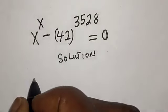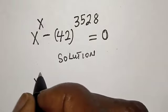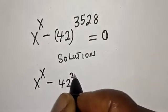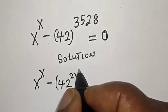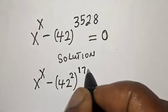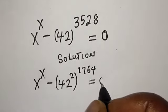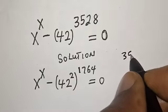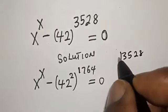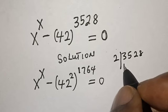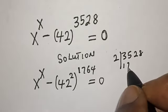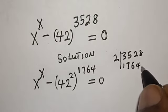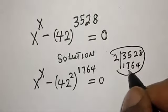Then this is X^X - (42)^2 raised to power 1764 equals 0. How do we get this 1764? If you have 3528 and you divide by 2: 2 in 3 is 1 remain 1, in 15 that is 7, then 2 in 12 is 6, and 2 in 8 is 4. So that is how we get this value.